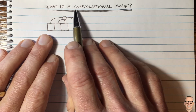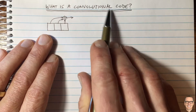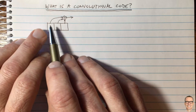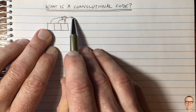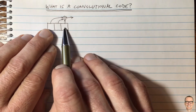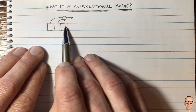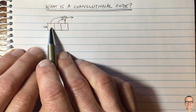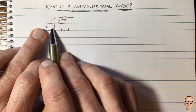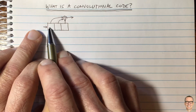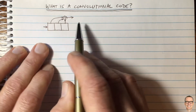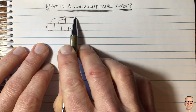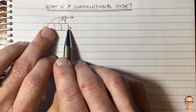How do we do it in a more clever way than the block code? The convolutional code is one such example. Instead of filling three elements and then making a fourth and moving on, we now think of this as a shift register. The input data is clocked in on the left-hand side, and every digital clock cycle you move the elements along.